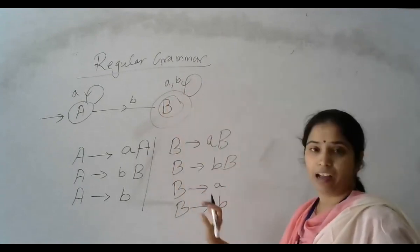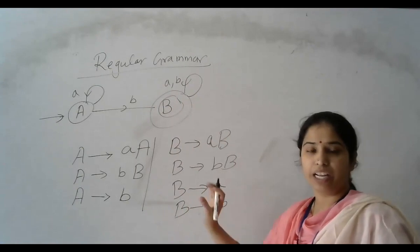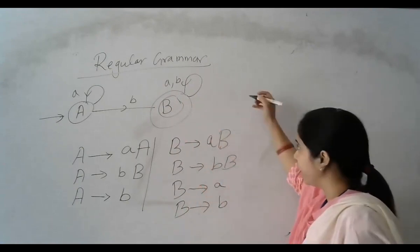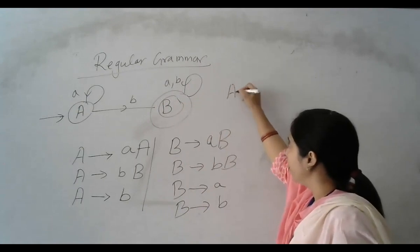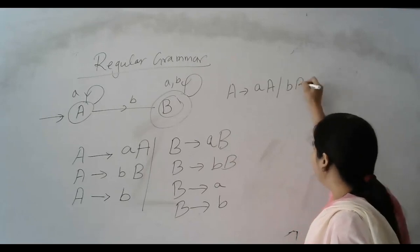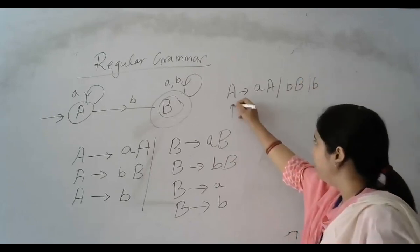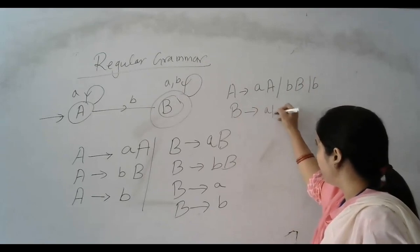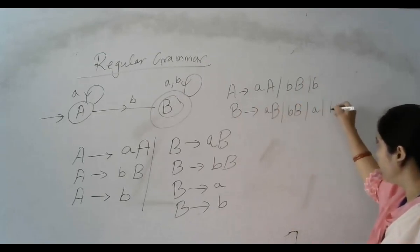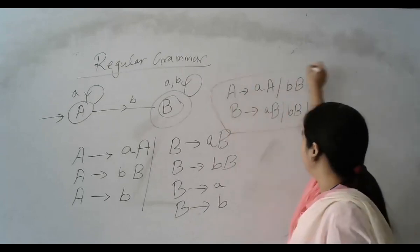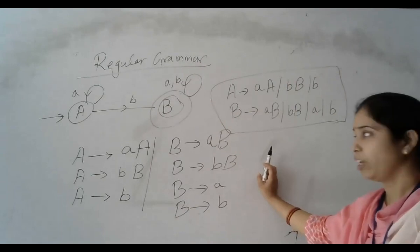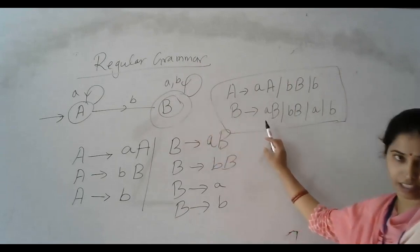And we have to write this regular grammar in this way: A tends to AA or BB, and B tends to AB or BB or A. This is the way to write the regular grammar. The question is this and the answer is this.